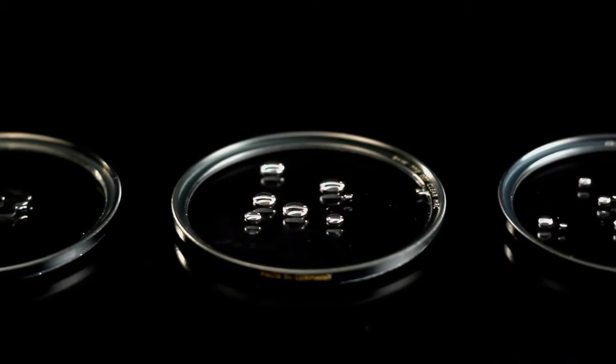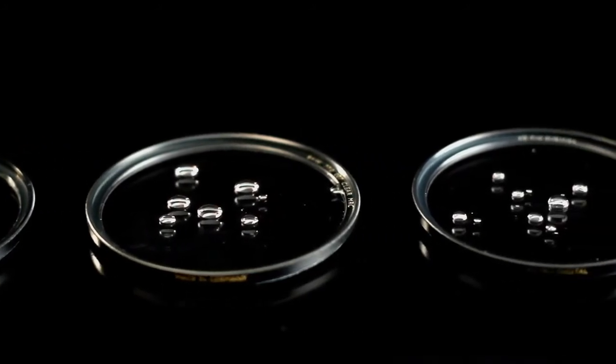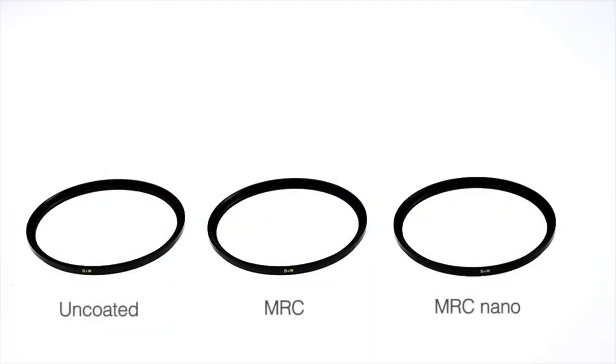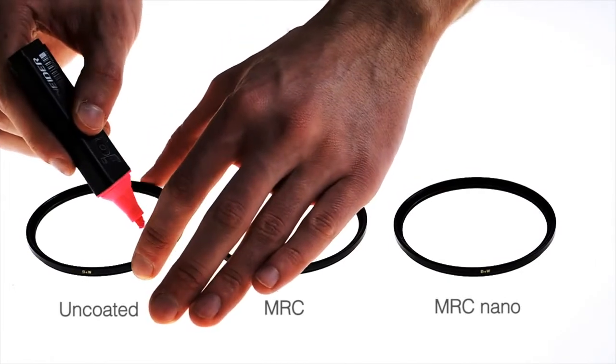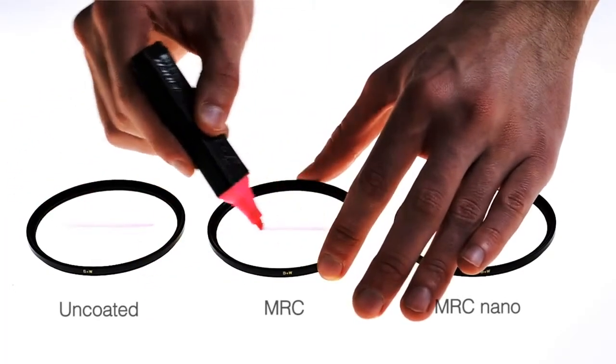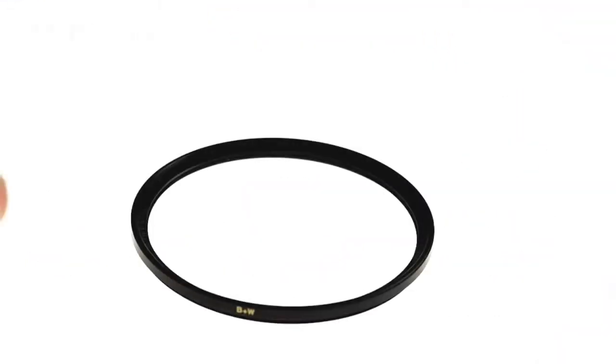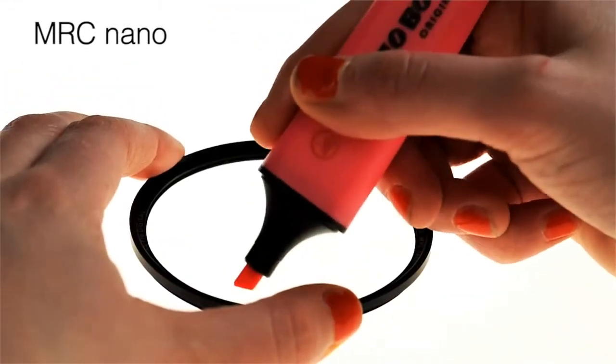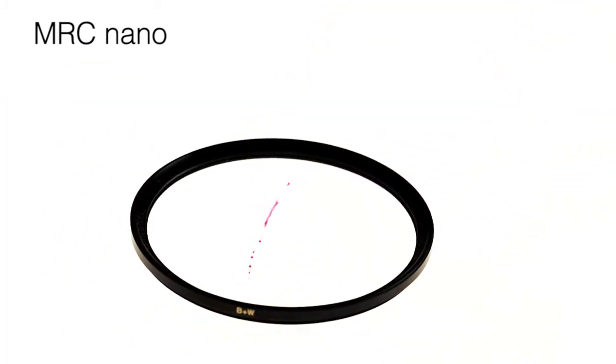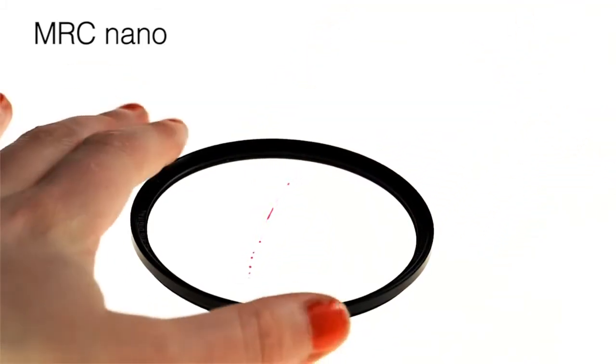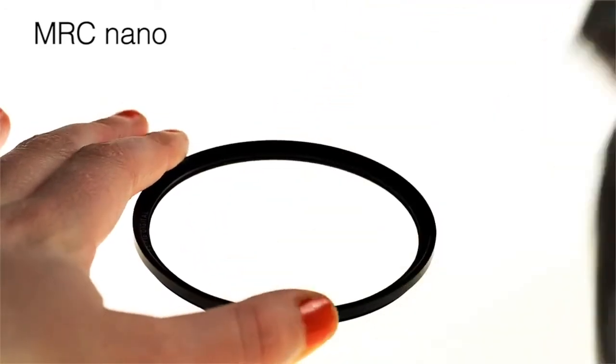B Plus W provides two types of filters with multi-resistant coating: MRC and MRC Nano. Their repellent surface minimizes the chance that dirt, moisture, and fingerprints stick to the surface. Thanks to Nano technology, B Plus W have developed a surface that is extremely tough and durable, and also very easy to clean.